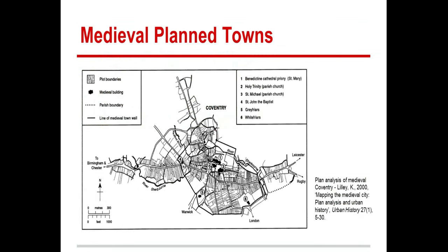Formally laid out town plans are considered a hallmark of the medieval small town, from the 12th century onwards. We have typical features: regular burgage plots, street grids, marketplaces. What we have on the screen is what's called a plan analysis of Coventry, undertaken by Keith Lilly.